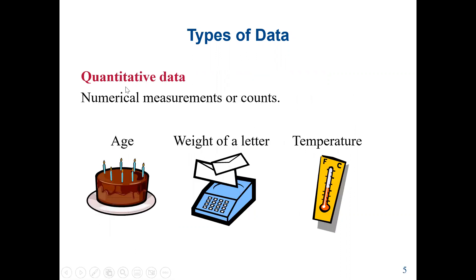The next is quantitative data. With quantitative data, we can perform arithmetic operations such as multiplication, addition, division, etc. Quantitative data is a numerical measurement or count. Examples can be the age of a person, weight of a letter, or the temperature of the weather.